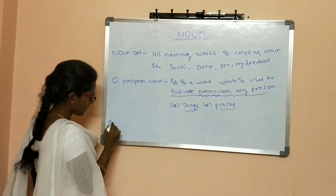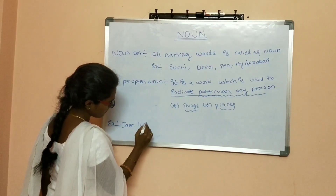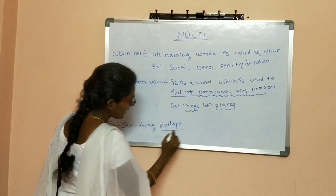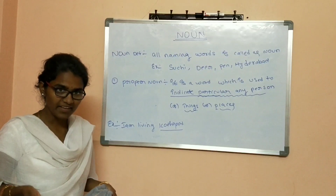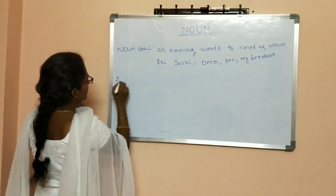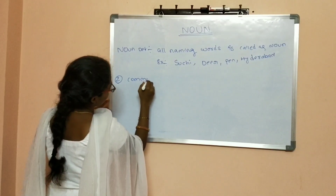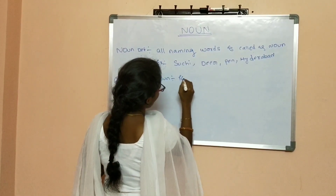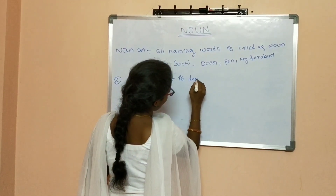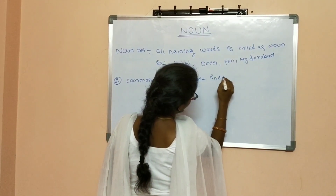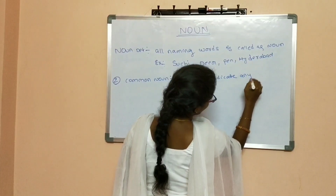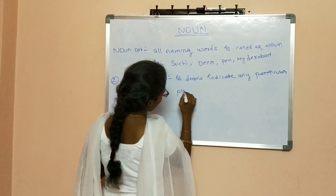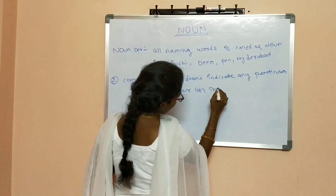Example: I am living in Kotape. Here, Kotape is specifically mentioned. I am living in Kotape — it is a proper noun because it indicates a particular place.